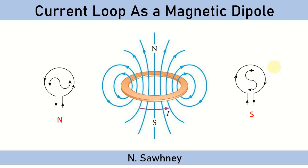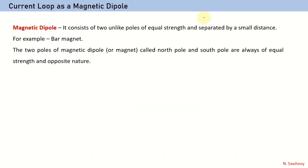Hello students. In this video we will learn how a current loop behaves as a magnetic dipole. In our previous chapter, Moving Charges and Magnetism, we have calculated the magnetic field at a point on the axis of a circular coil carrying current. We will be using that derivation in this topic.